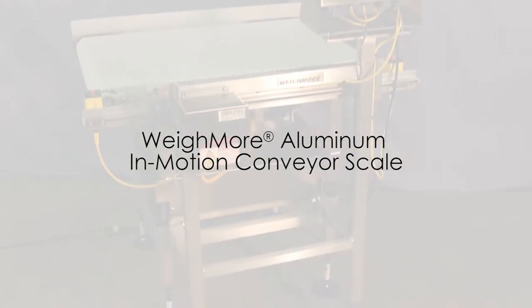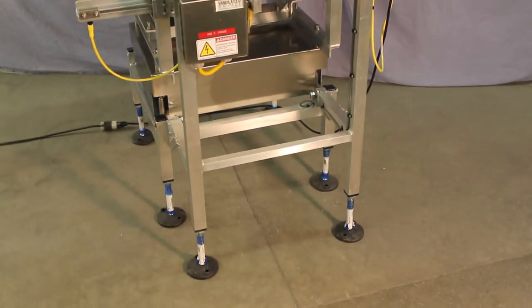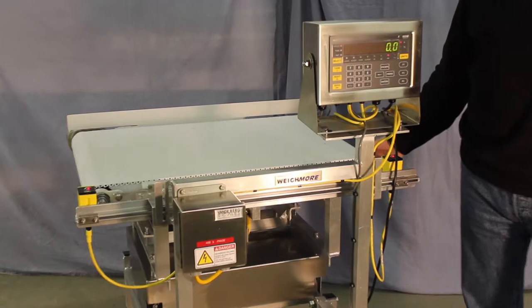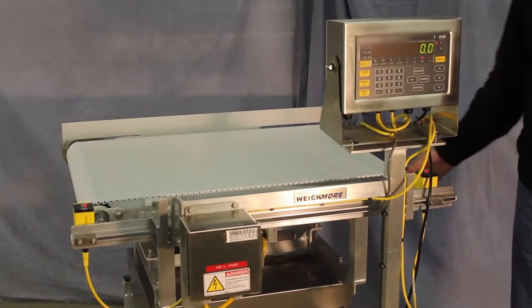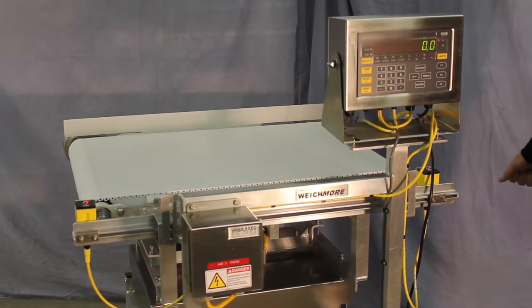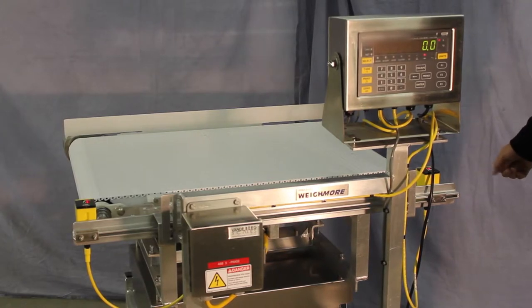The product we have today is an aluminum conveyor scale. The customer is using it to weigh packages of books and other reading materials to be shipped out. This conveyor scale is a good economic solution for the customer.